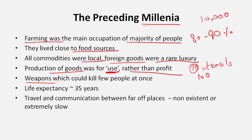A potter in a village would make only so many pots as would be used in the village — nothing was for profit, all for the use of the people. There were also no modern weapons capable of killing thousands. Weapons were mainly rudimentary — swords or old-type muskets — which could kill only four or five people even if you were very good with them.